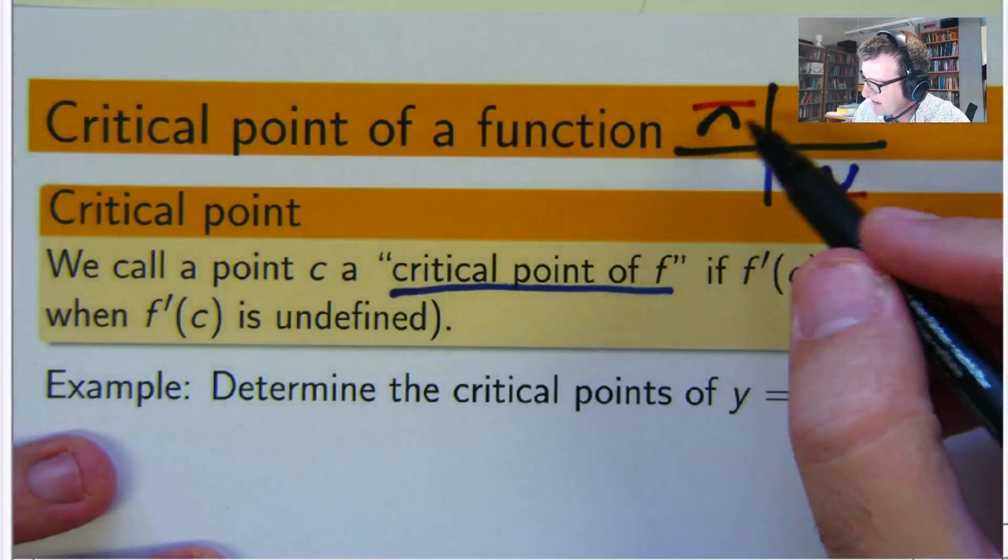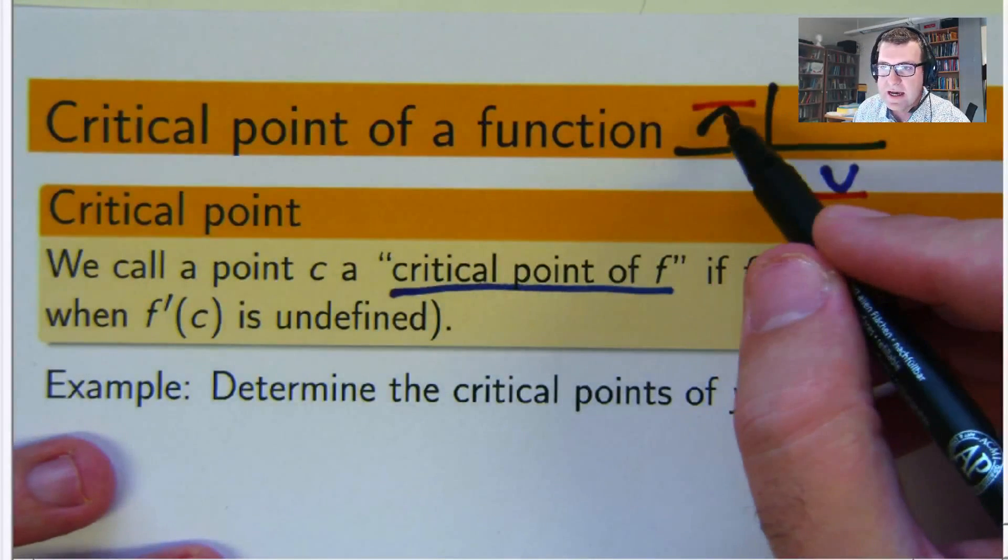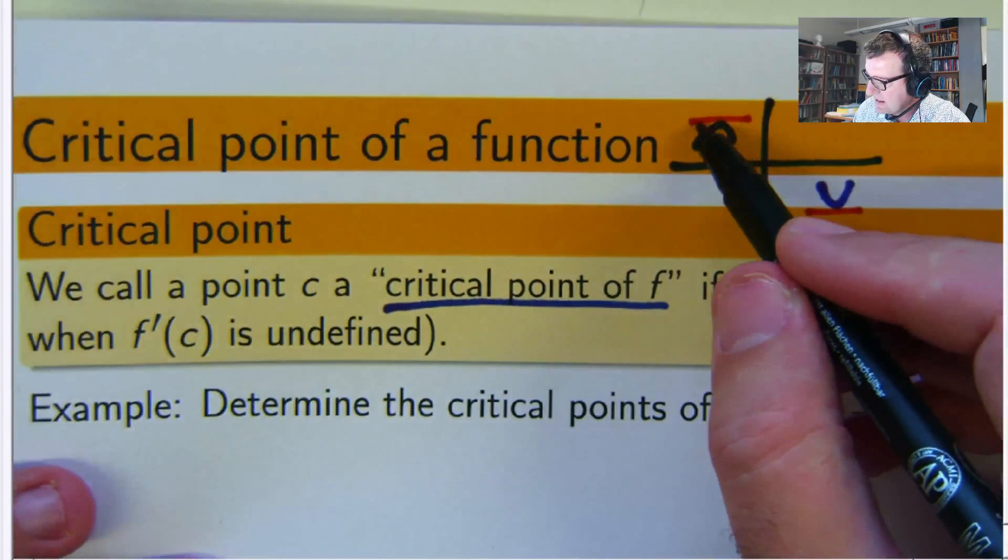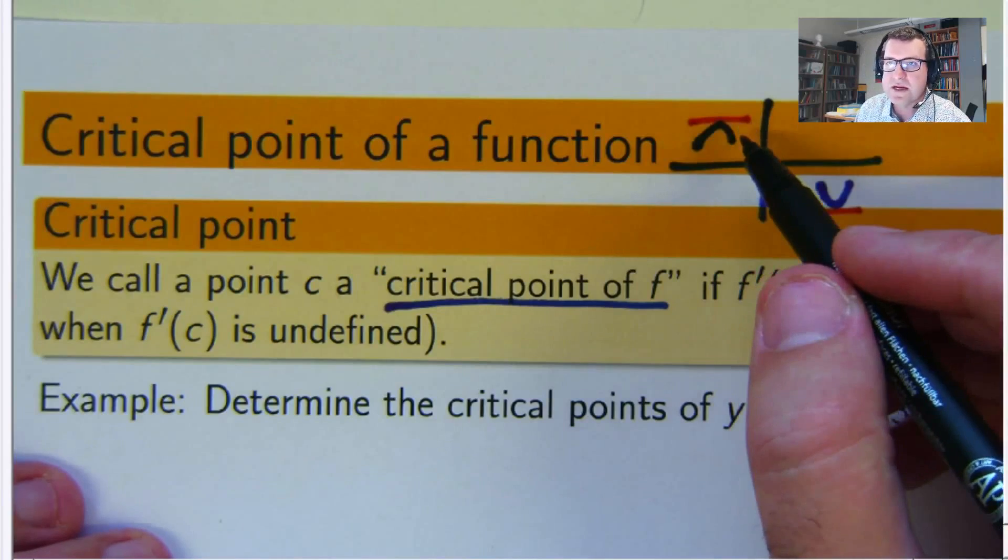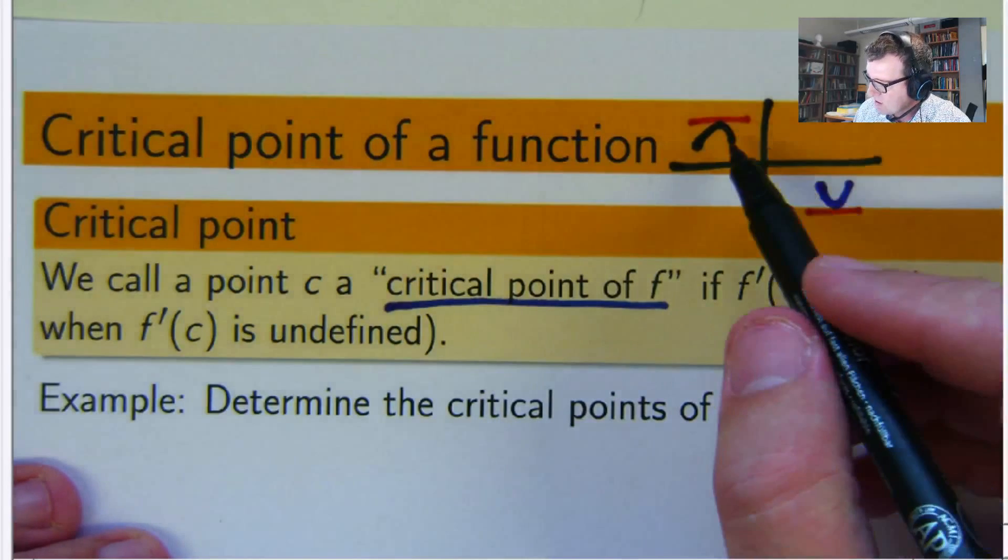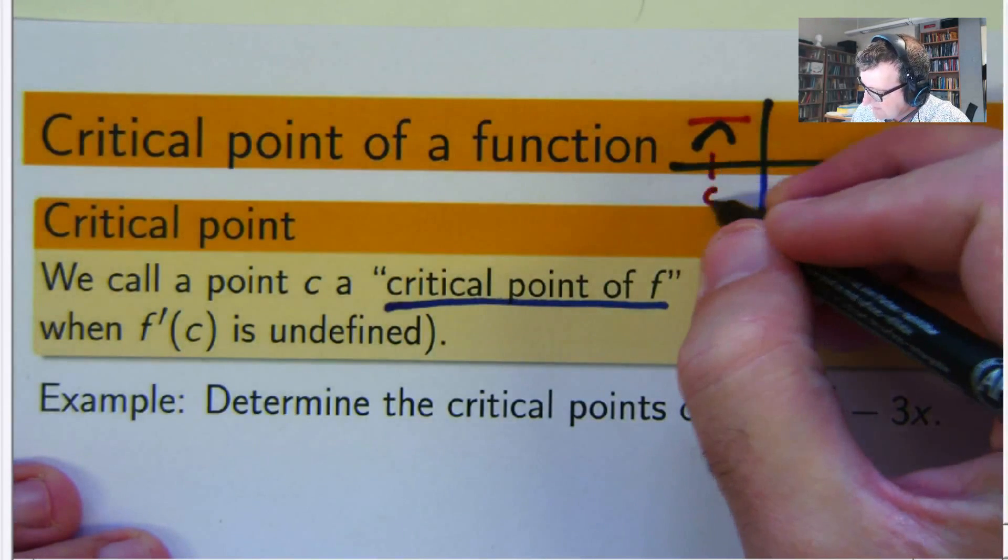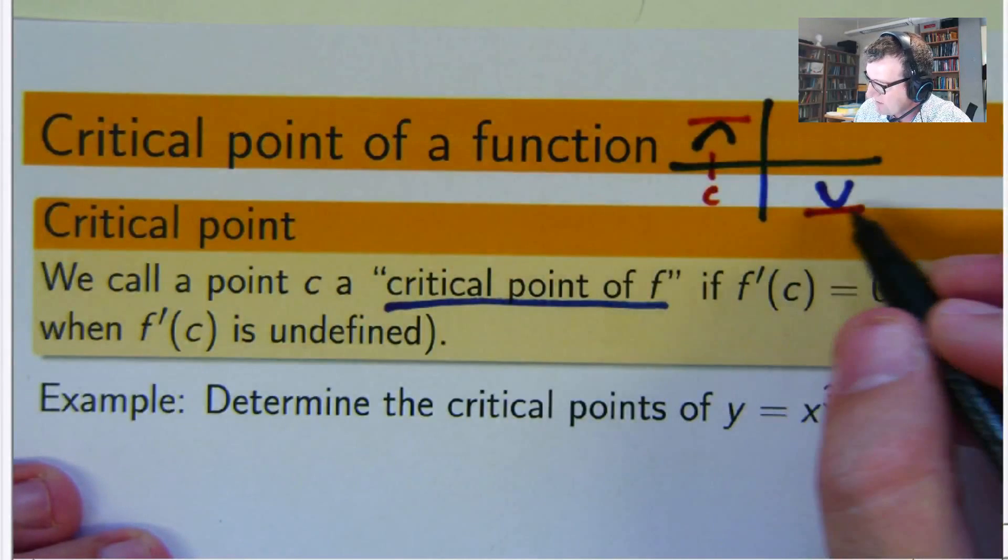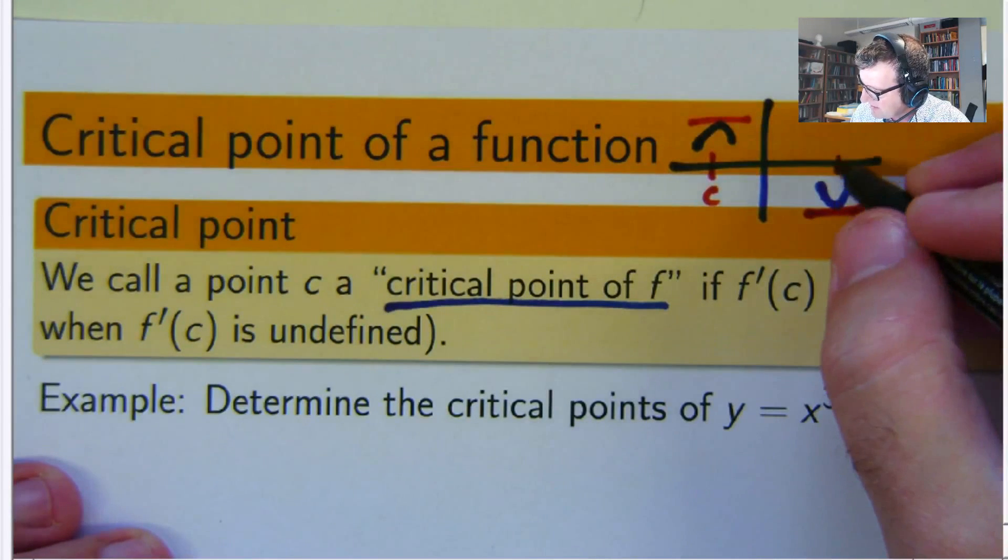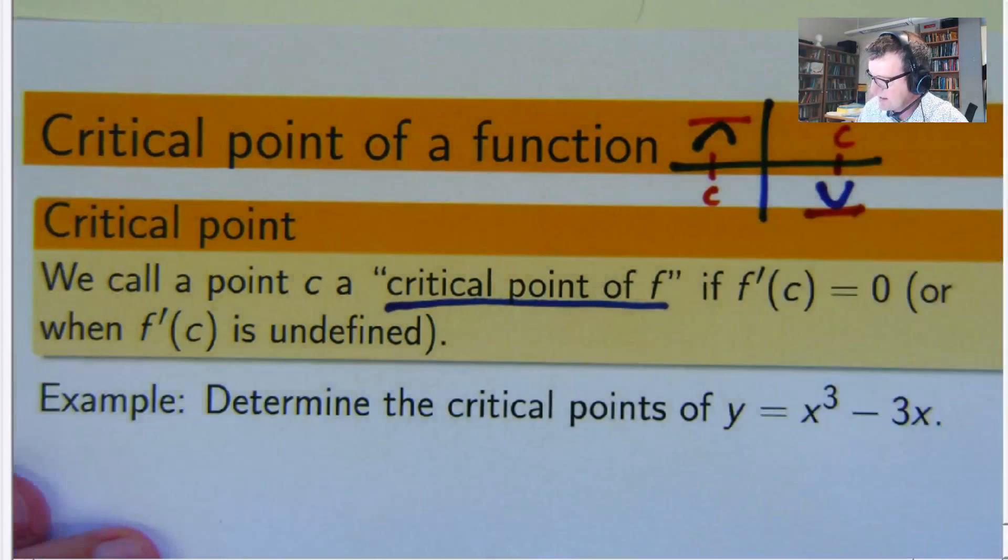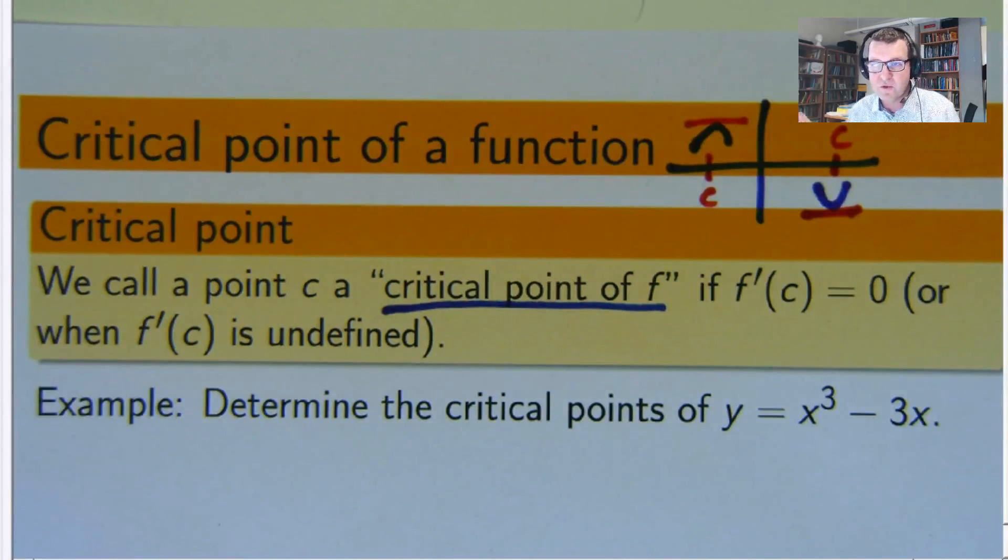So if this is part of my graph and I look at the tangent line to that part of the graph, I see it's horizontal, right? It has slope 0. So this would be a critical point. Same with this case. Here, we look at the slope of the tangent line. This would be a critical point. A function can have more than one critical points.